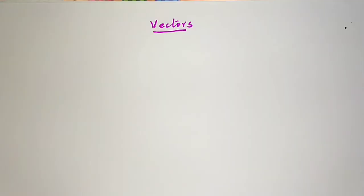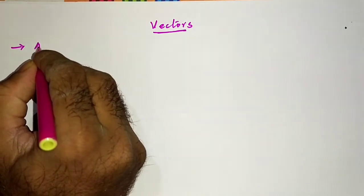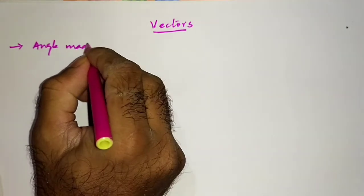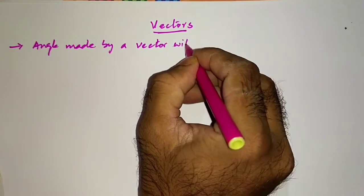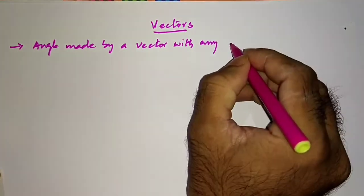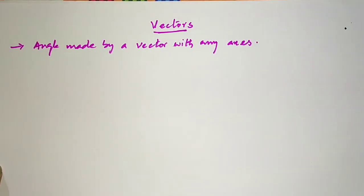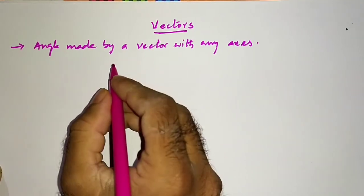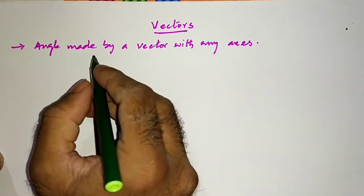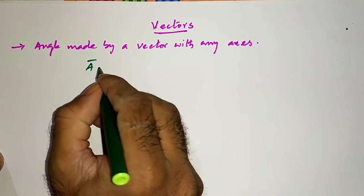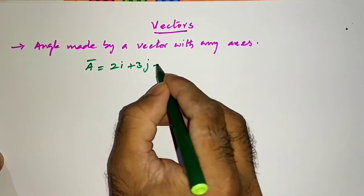Yesterday a student asked me a question: how to calculate the angle made by a vector with any axis — meaning the angle made by the vector with the x-axis, y-axis, or z-axis. Let us see how to calculate that. Suppose we take vector A = 2i + 3j − 4k.